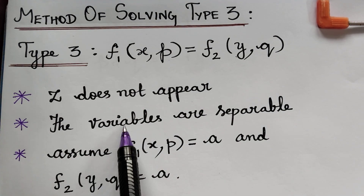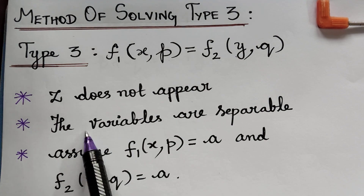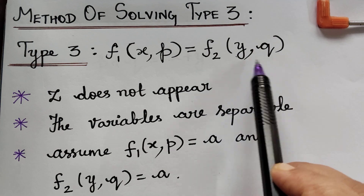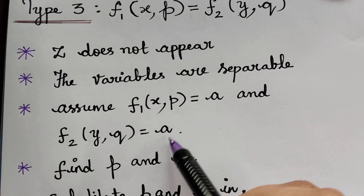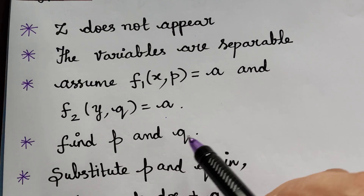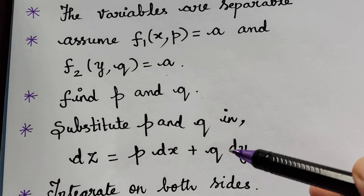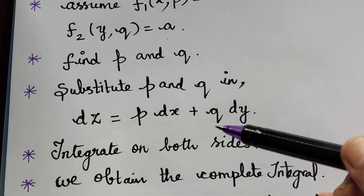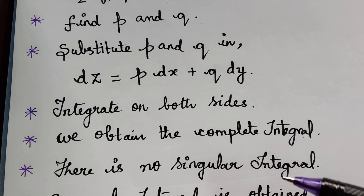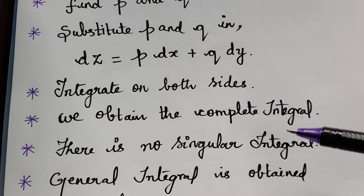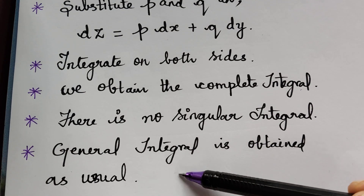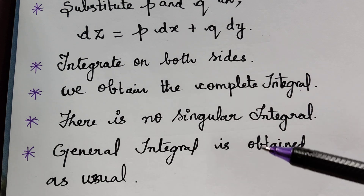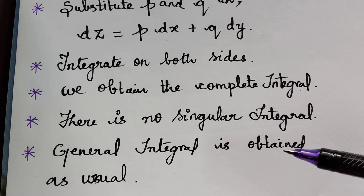We will be able to separate the variables — that is, the variables will be separable. In that case, we have to assume each of the functions to be equal to a constant a. Then we have to find the values of p and q and substitute in dz = p dx + q dy. On integration, we will obtain the complete integral. There is no singular integral for this kind of problem, and the general integral is obtained by the usual method seen previously.